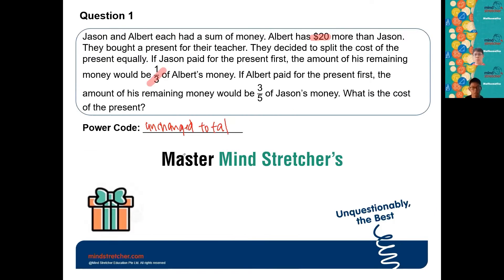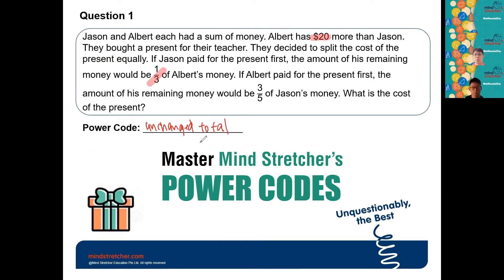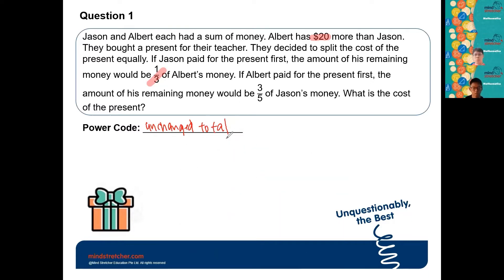The reason why this is an unchanged total is because no matter whether Jason is the one who paid for the present or Albert is the one paying for the present, the amount of money that they have in total is actually unchanged.